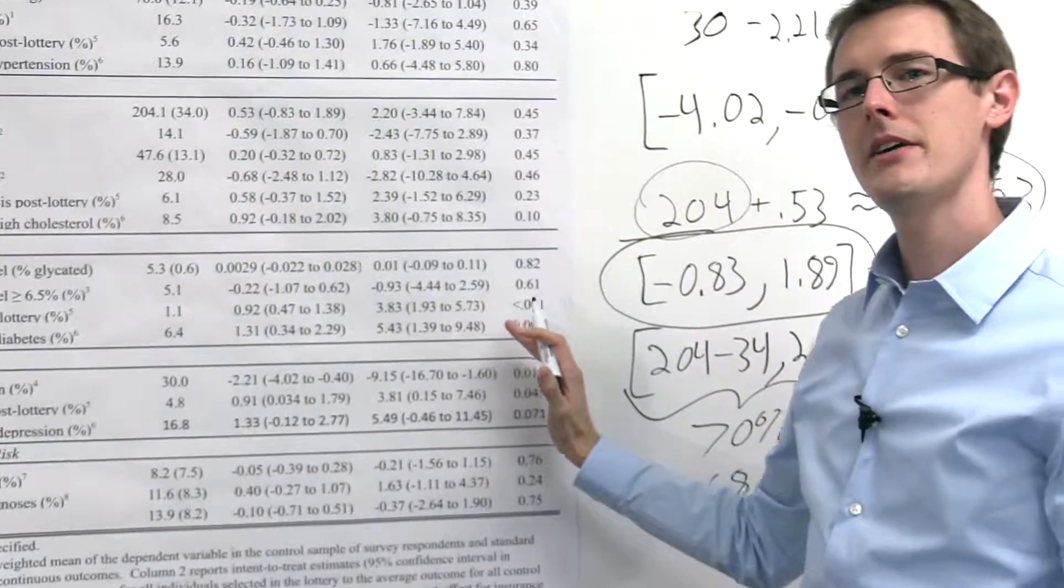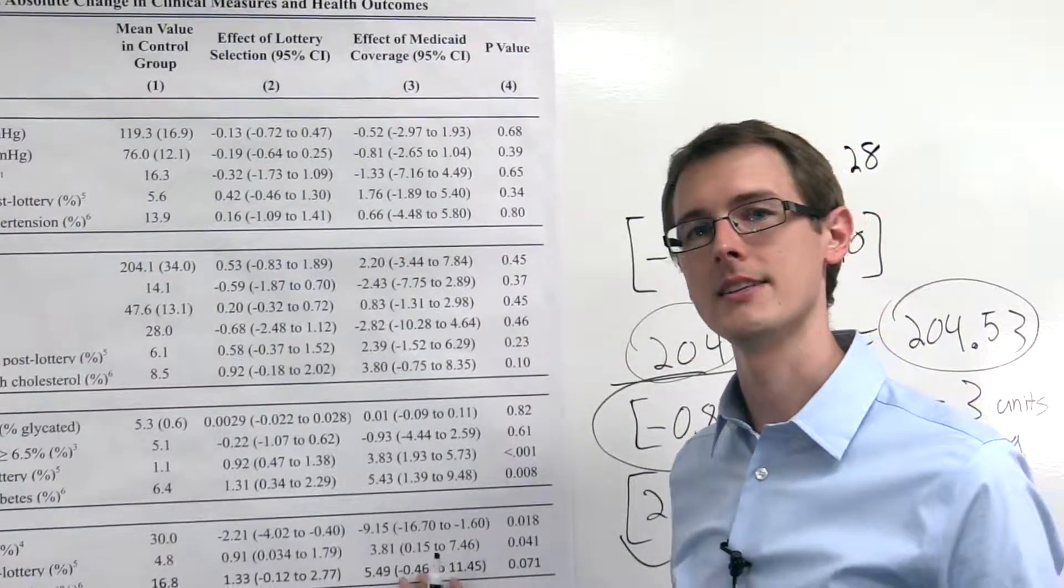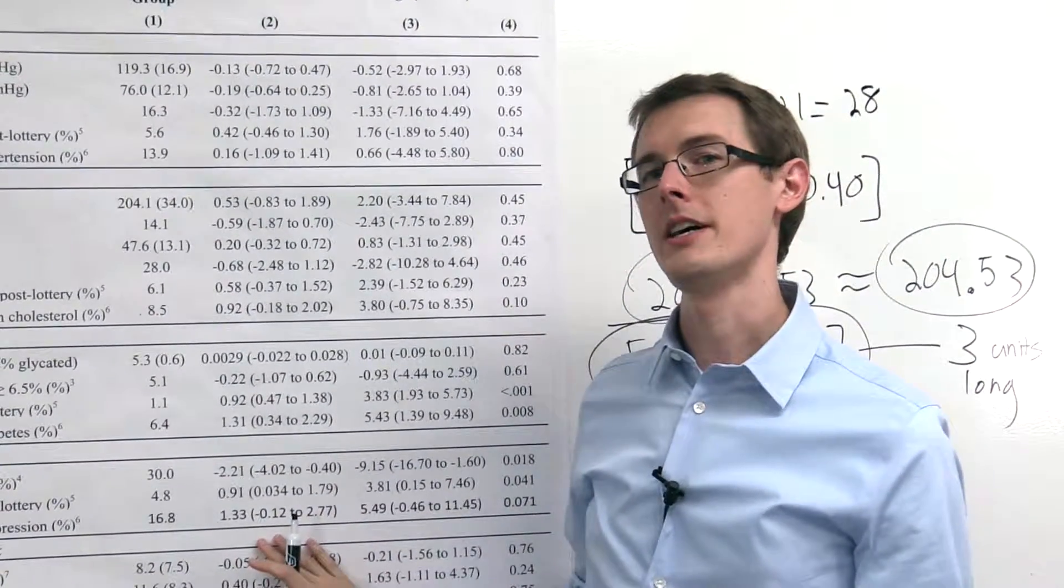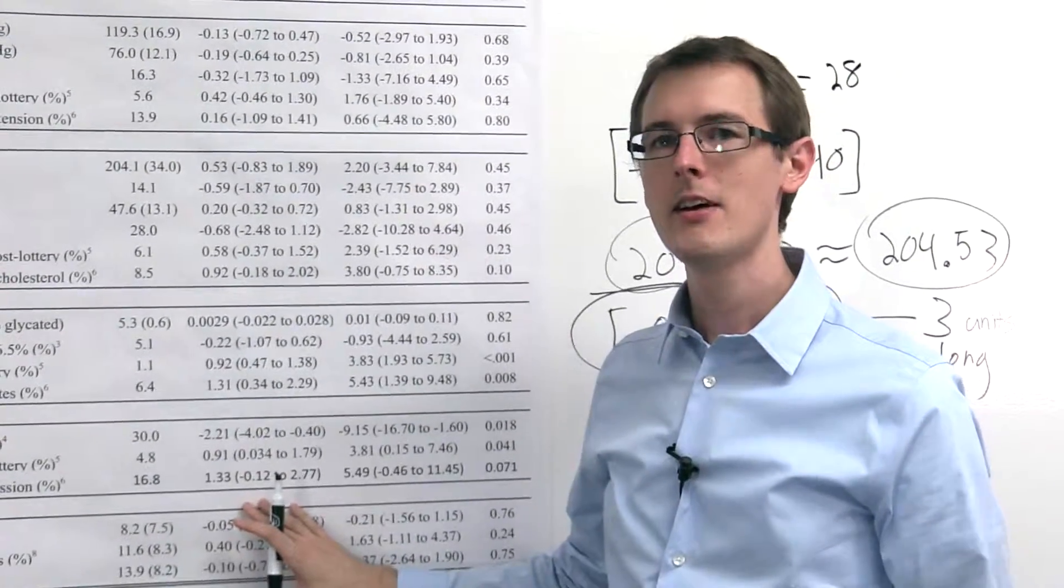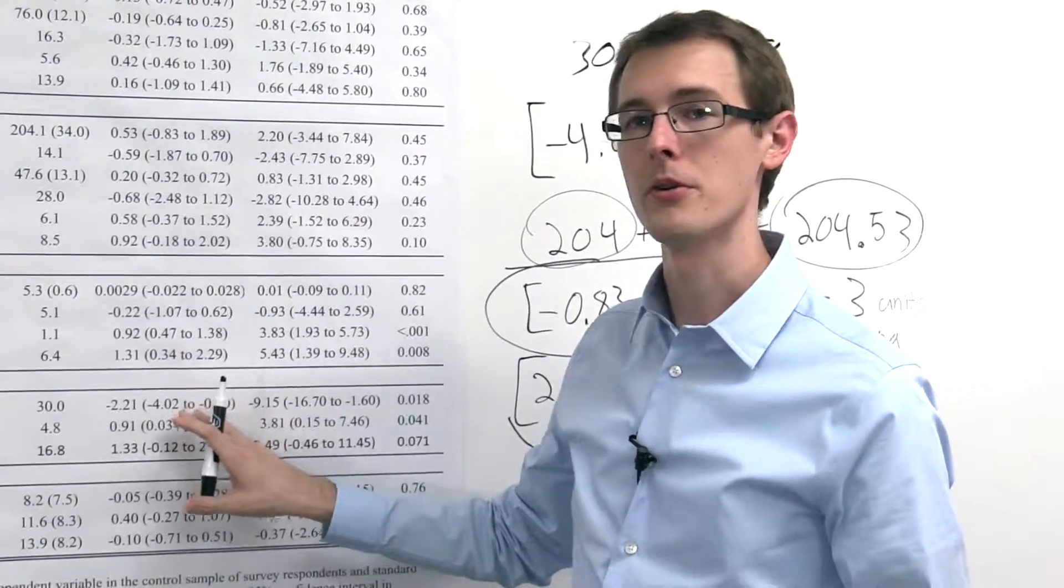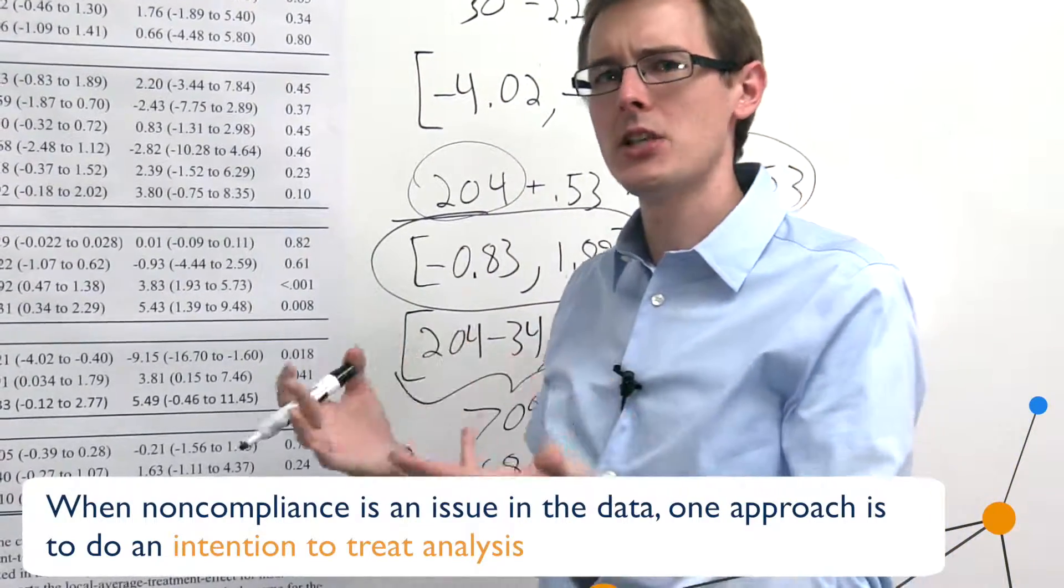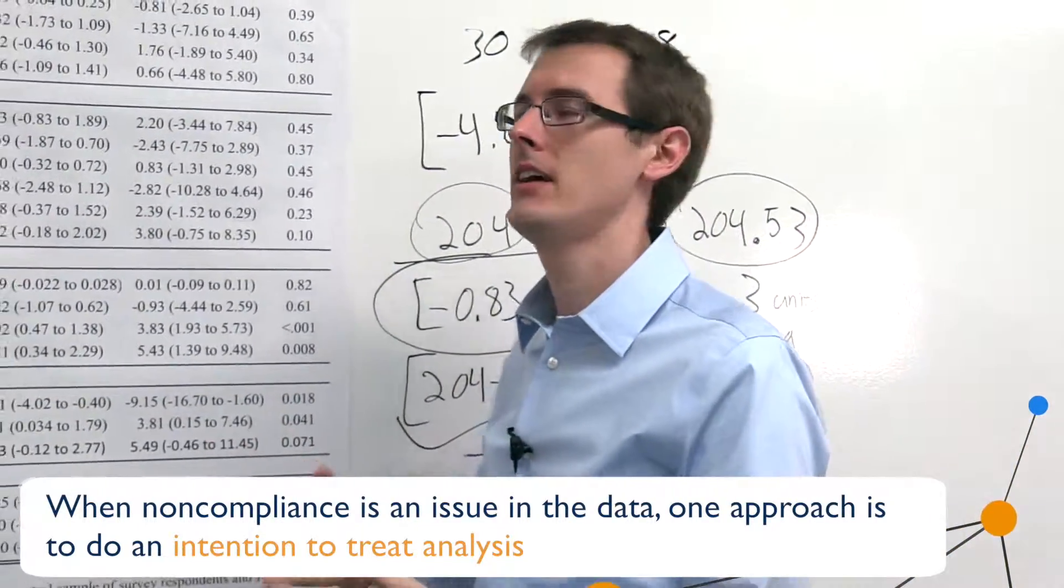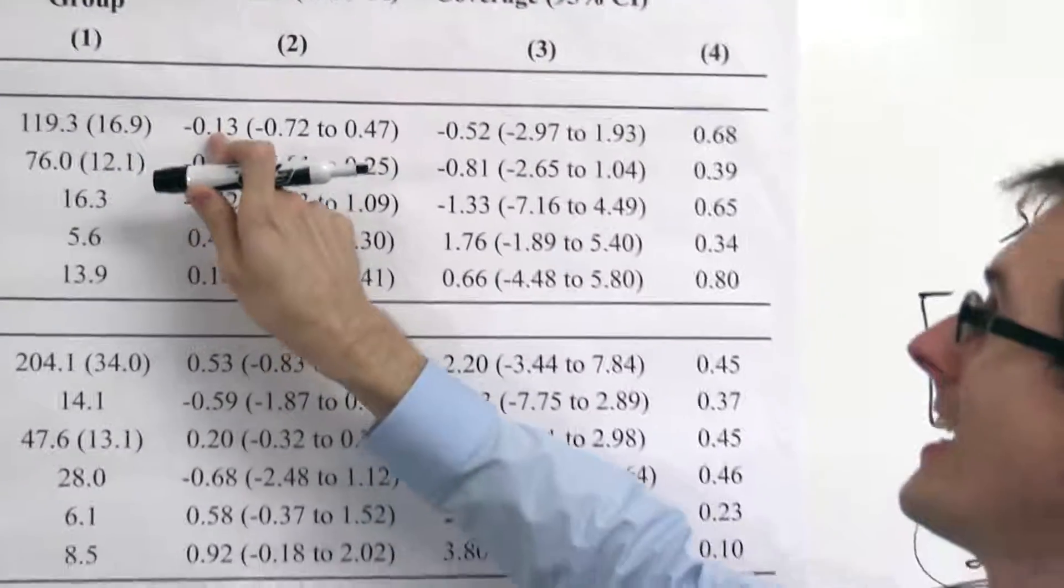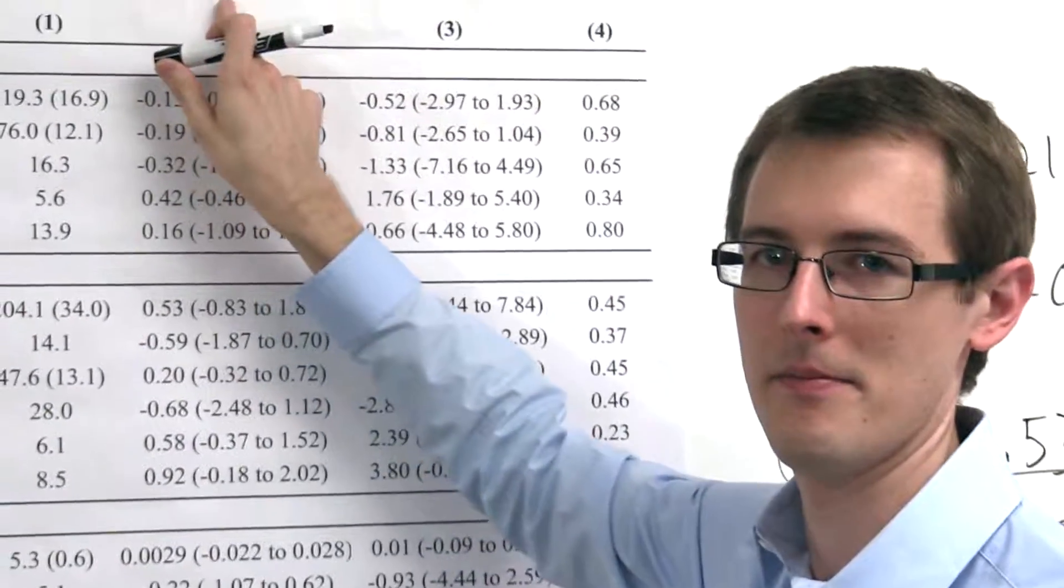Now, there are other columns here that I haven't talked about. This third column comes from something called instrumental variables analysis that we'll talk about later on. Column 2, what I've been calling average treatment effects this whole time, comes from intention-to-treat analysis. Remember, which is because there are non-compliers in this data. There are people in the treatment group who actually didn't get Medicaid. And all of this analysis I showed you here actually counts those people as having Medicaid. So that's why up here they actually write effect of lottery selection.